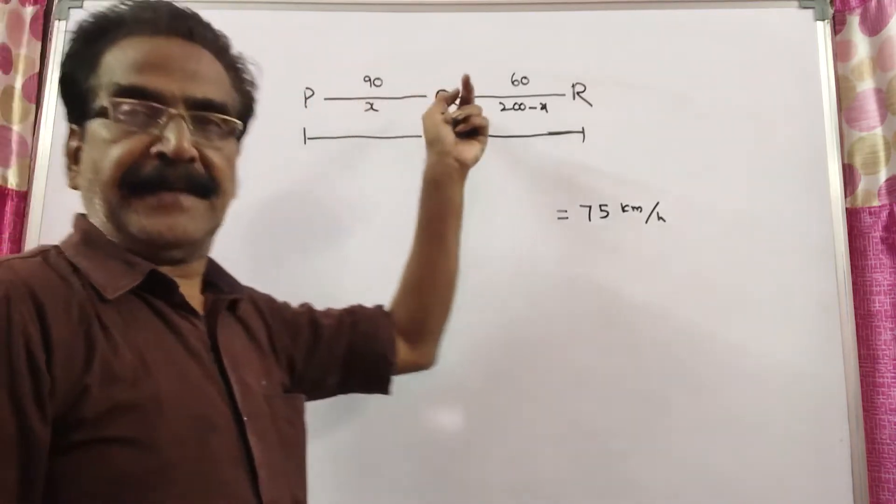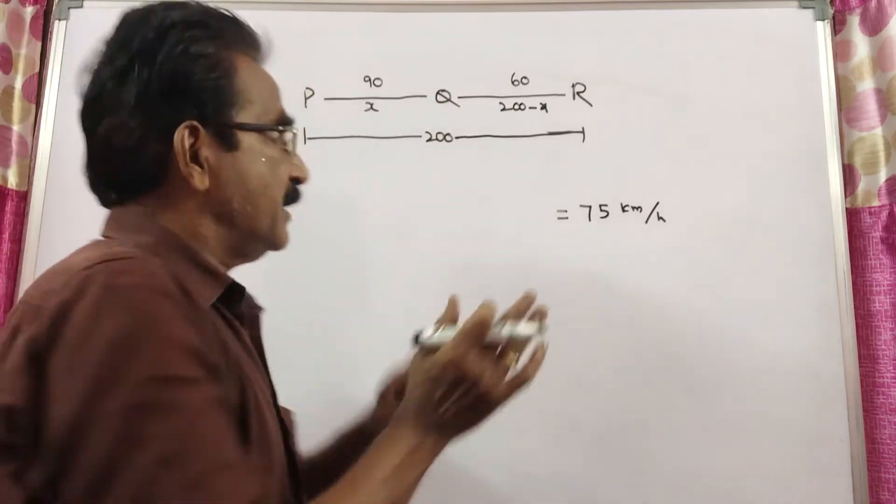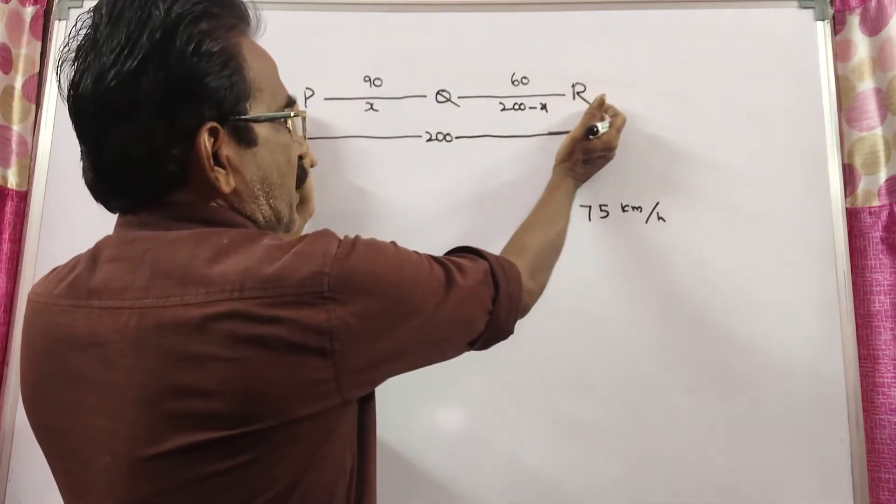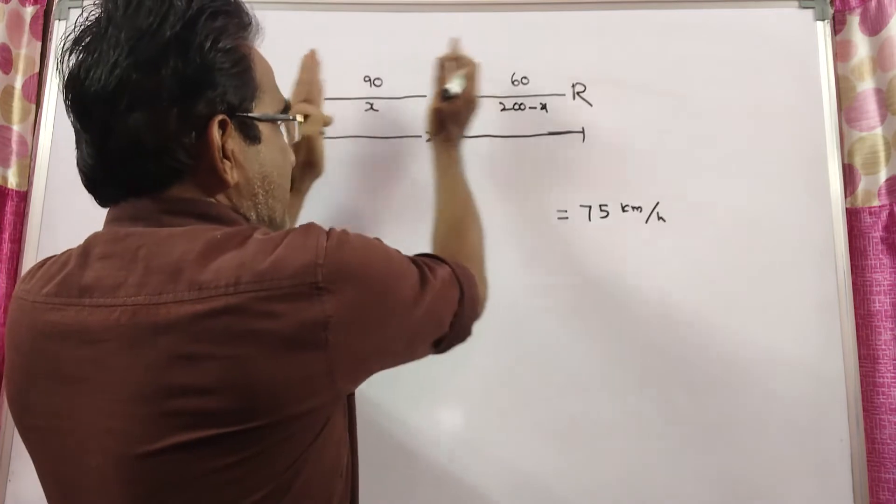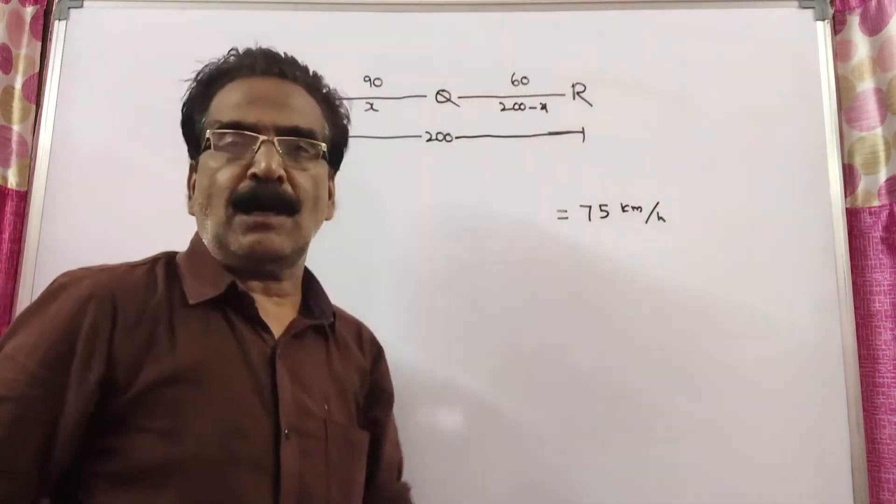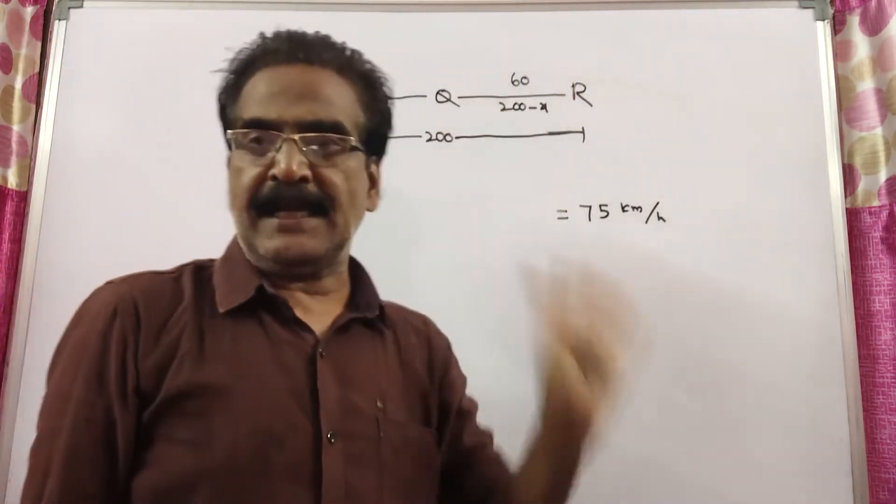Let's say the distance between P and Q is x km. We know the total distance is 200. So the distance between Q and R is 200 minus x.